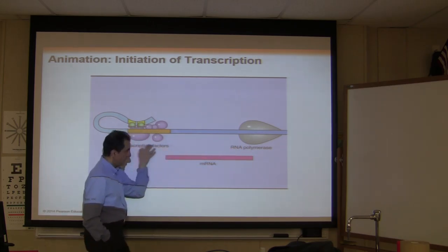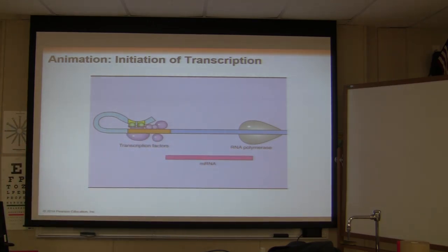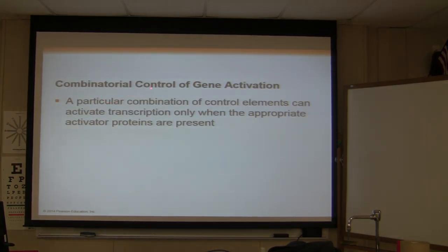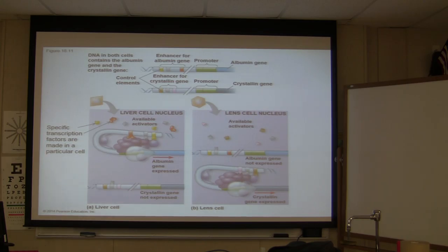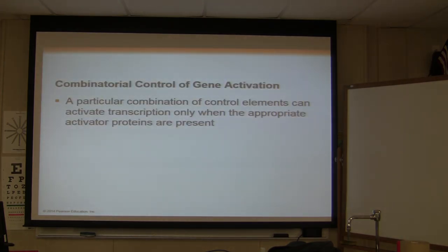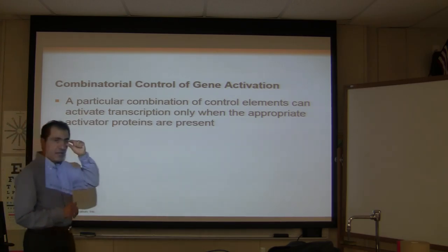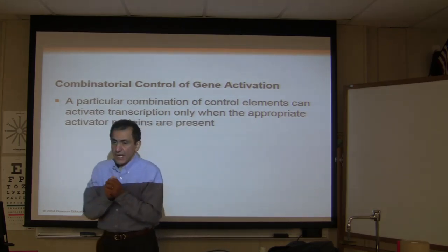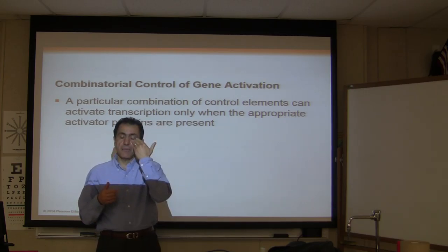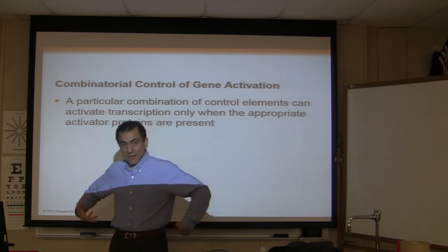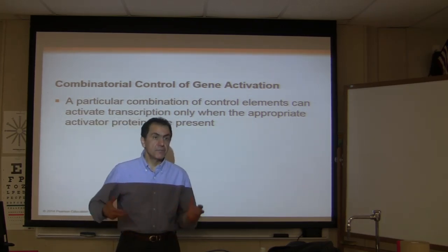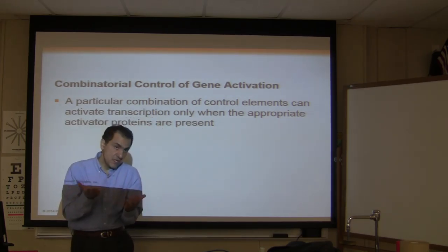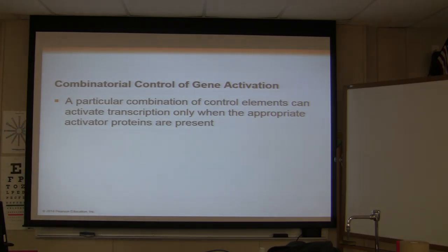There is a protein molecule that causes the DNA to bend, and then RNA polymerase goes ahead and starts making the mRNA. Regarding combinatorial control of gene activation: a particular combination of control elements can activate transcription only when the appropriate activated proteins are present. For example, the cells in your eyes make a protein called crystallin, and the cells in your liver make a protein called albumin. Albumin is responsible for osmosis in your blood, and crystallin is needed in your eye so you can see.